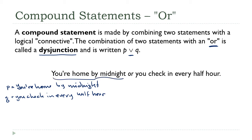Okay, so to translate this statement into a symbolic form, I'm going to replace 'your home by midnight' with p, and I'm going to replace 'you check in every half hour' with q, and this word connecting them, the 'or', gets replaced with our new or symbol.